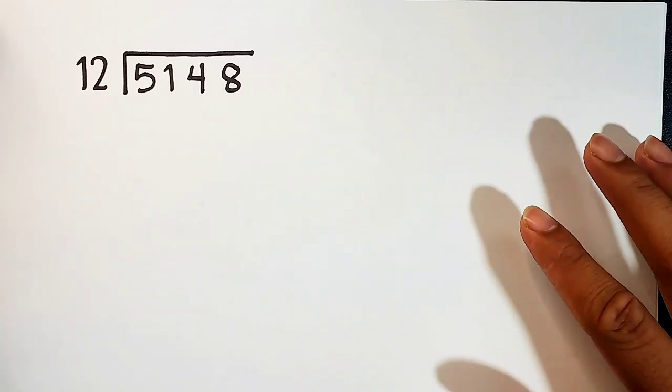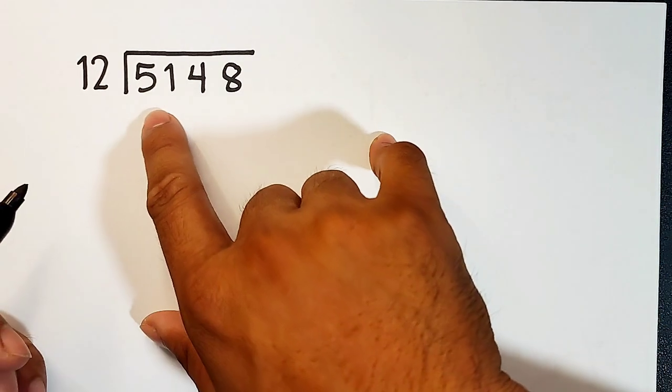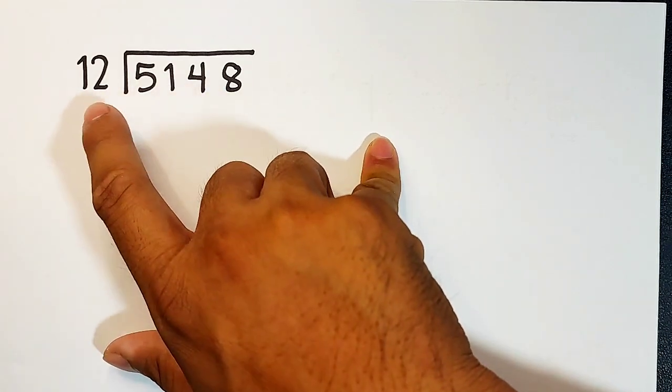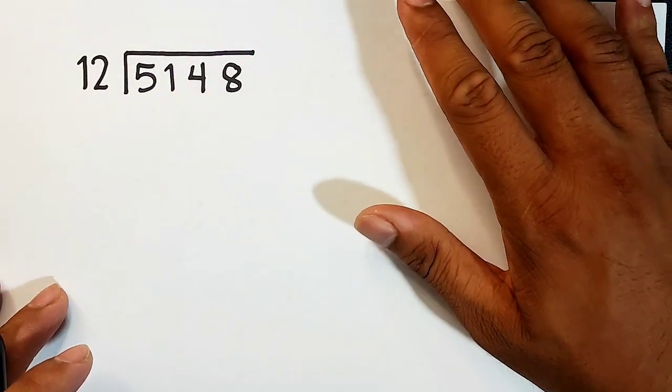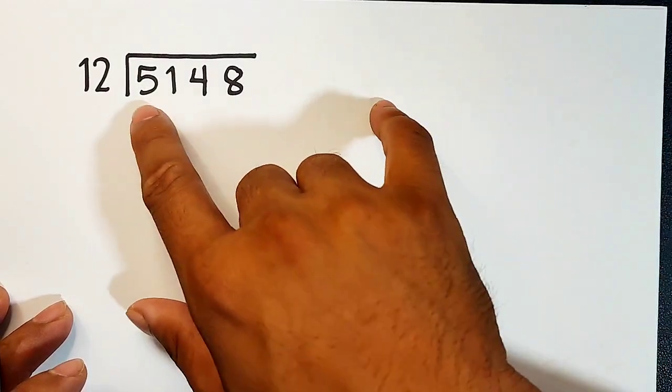So let's continue with another example for you to familiarize how to divide numbers with two-digit divisors. So what we have here, guys, is 5,148 to be divided by 12. This is a two-digit number. So let's try.